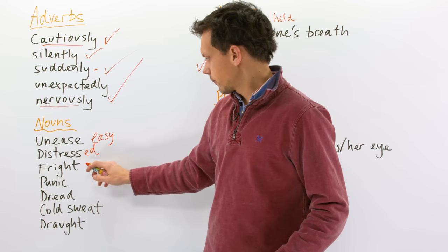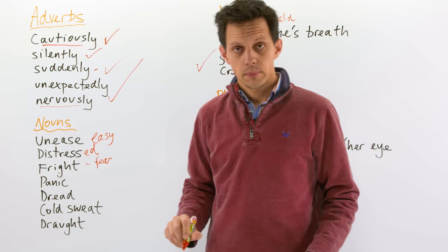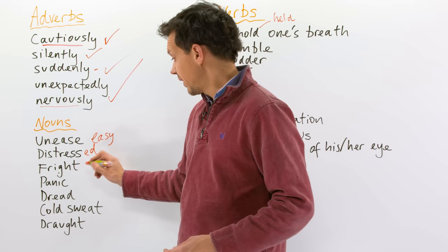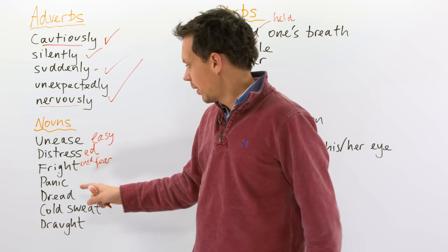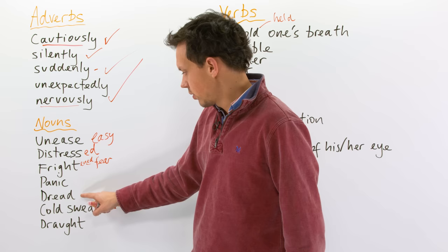Fright. This means fear. Obviously, if I wanted to turn it into an adjective, I would put e-n-e-d. Frightened. Panic is, help, what's going to happen? Panic. Fear, again. Dread. This is a sense of not liking what is going to happen in the future, being really quite scared.